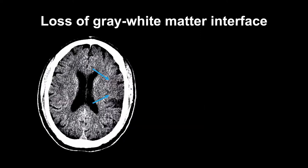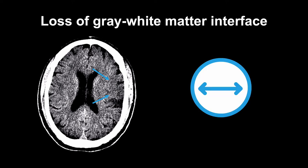On this image, the arrows indicate focal loss of the normal borderline between the gray matter and the white matter. Look carefully at the other side to see what that interface should look like.